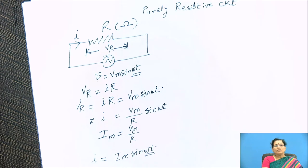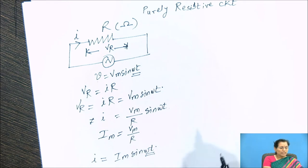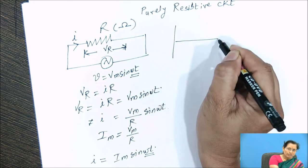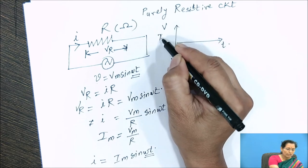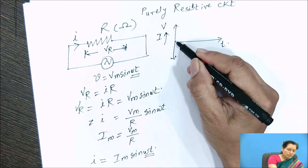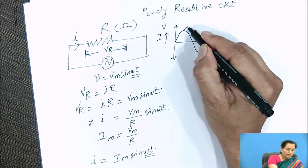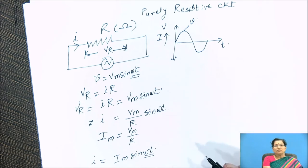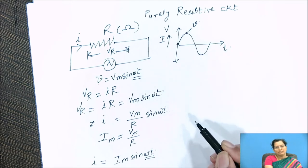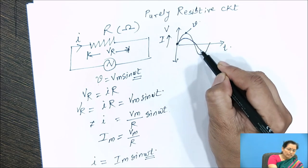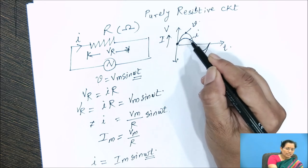If we compare the voltage equation and the current equation, the angle omega t is the same in both. That means voltage and current are both in phase. The phase difference between voltage and current is zero. We can draw the waveforms: the voltage cycle and the current cycle start at the same time and reach their maximum values at the same time — both voltage and current are in phase.